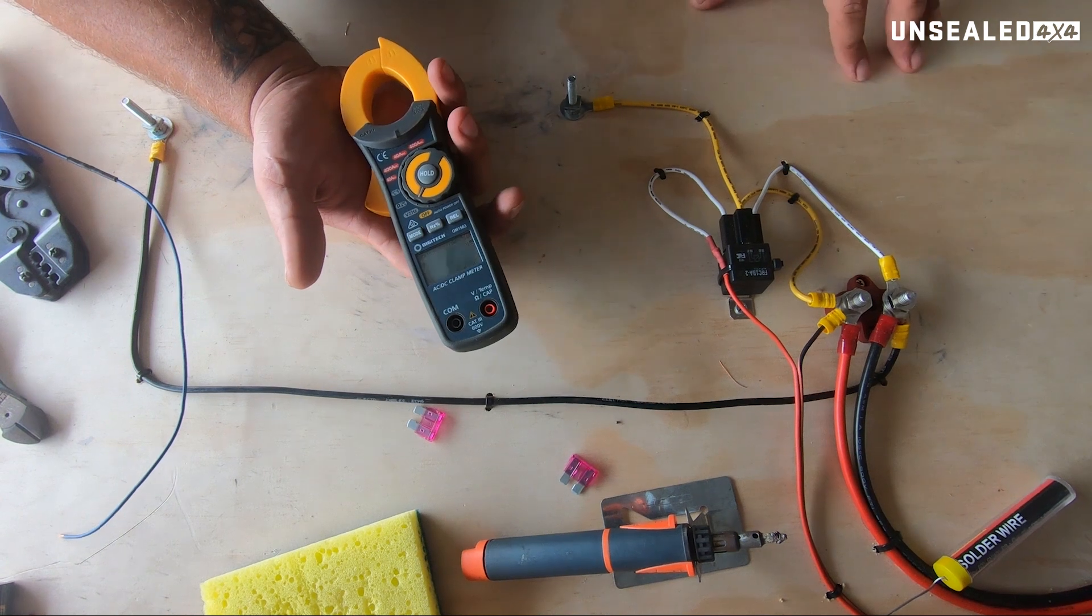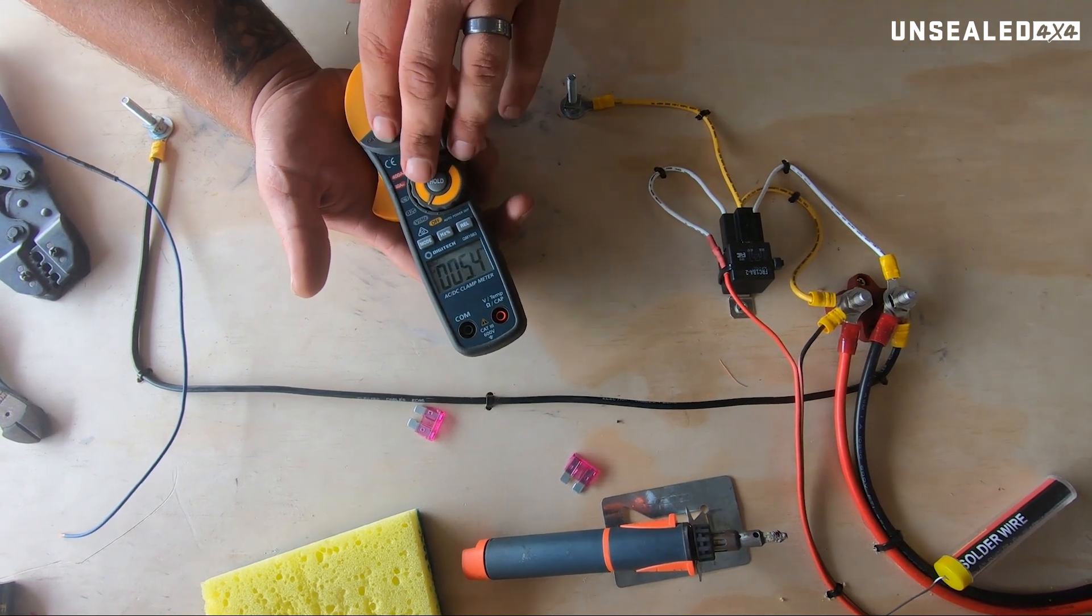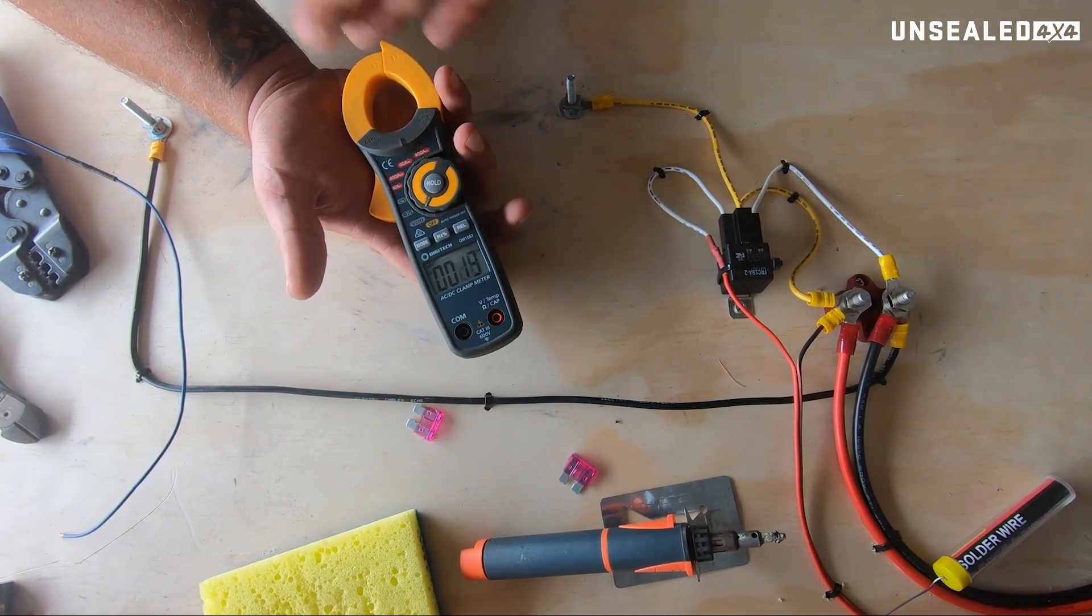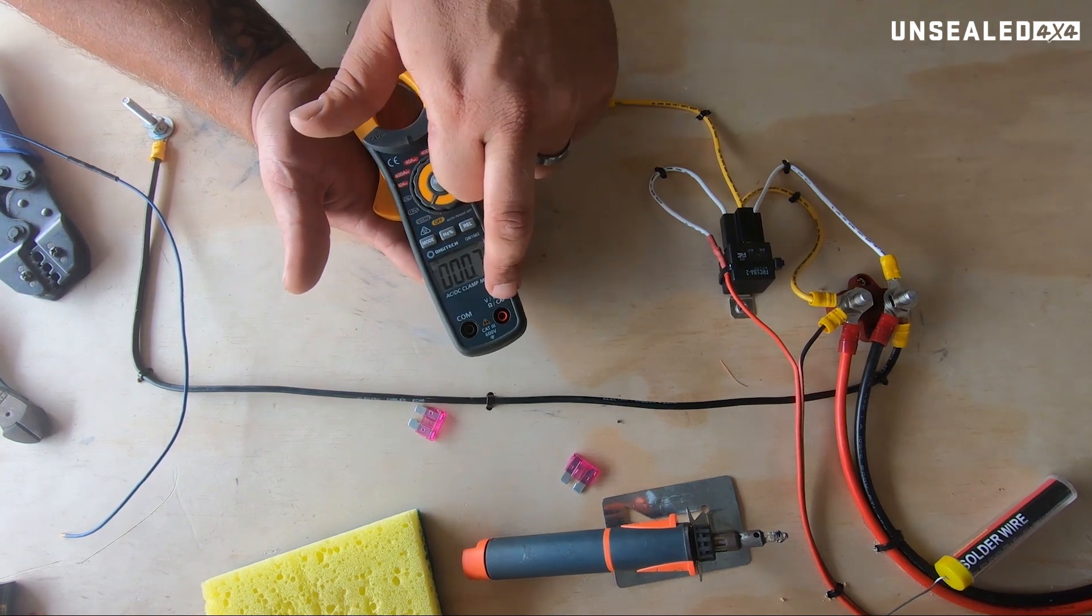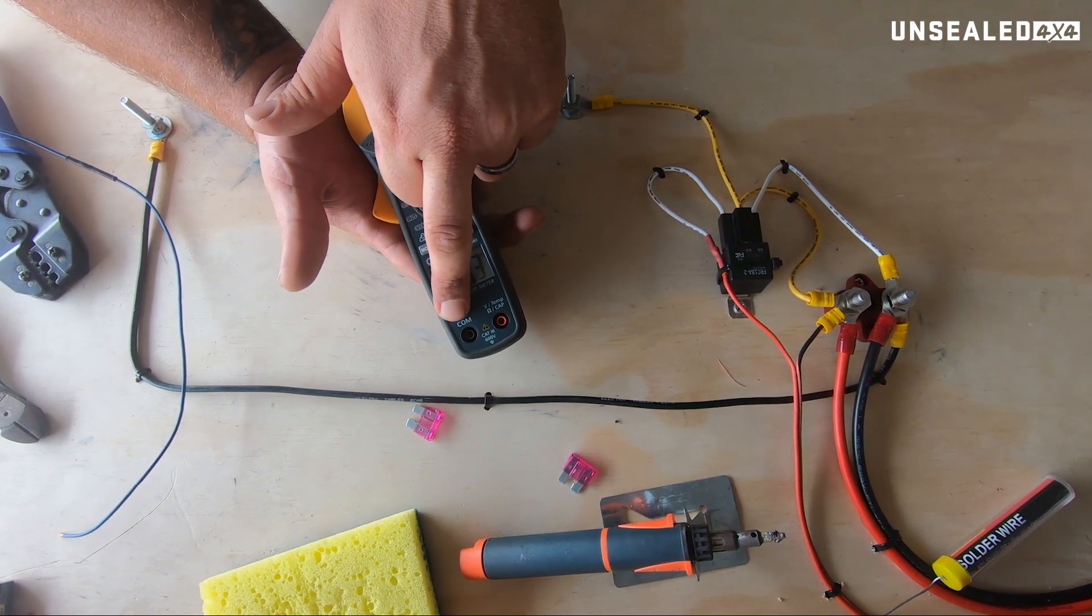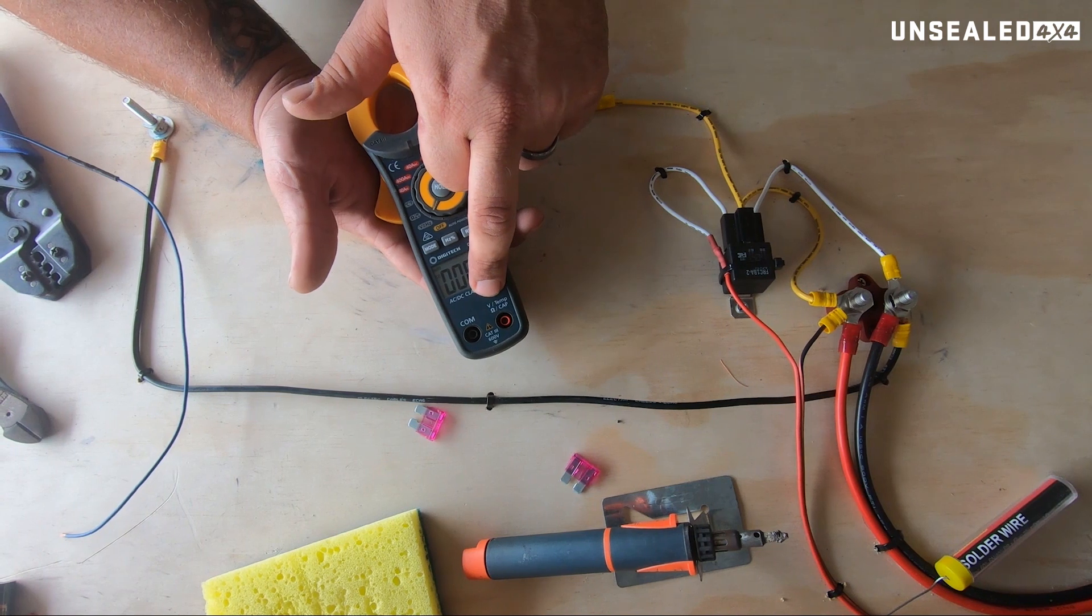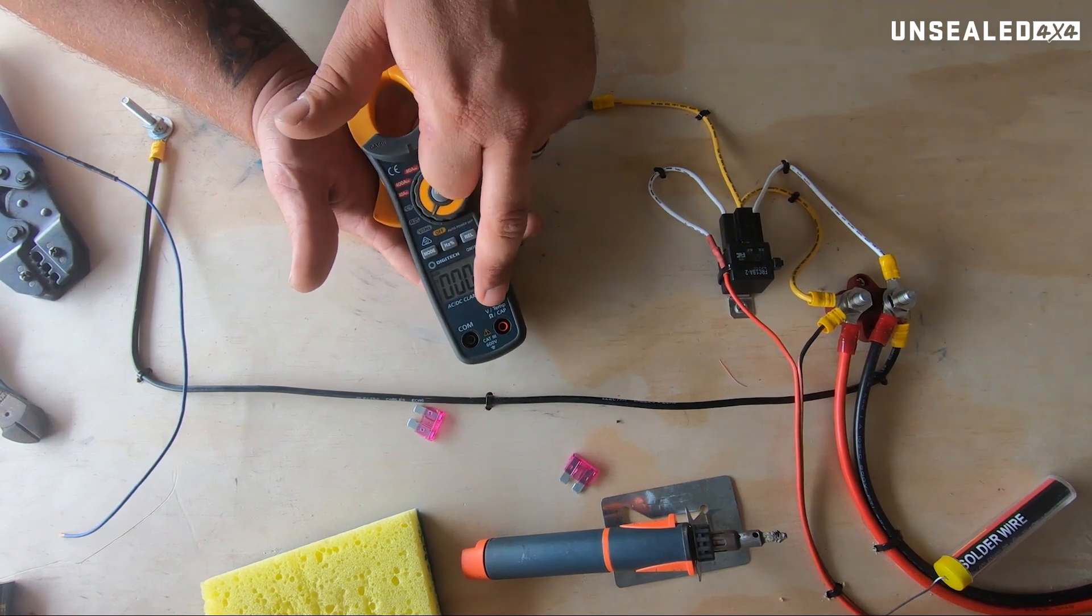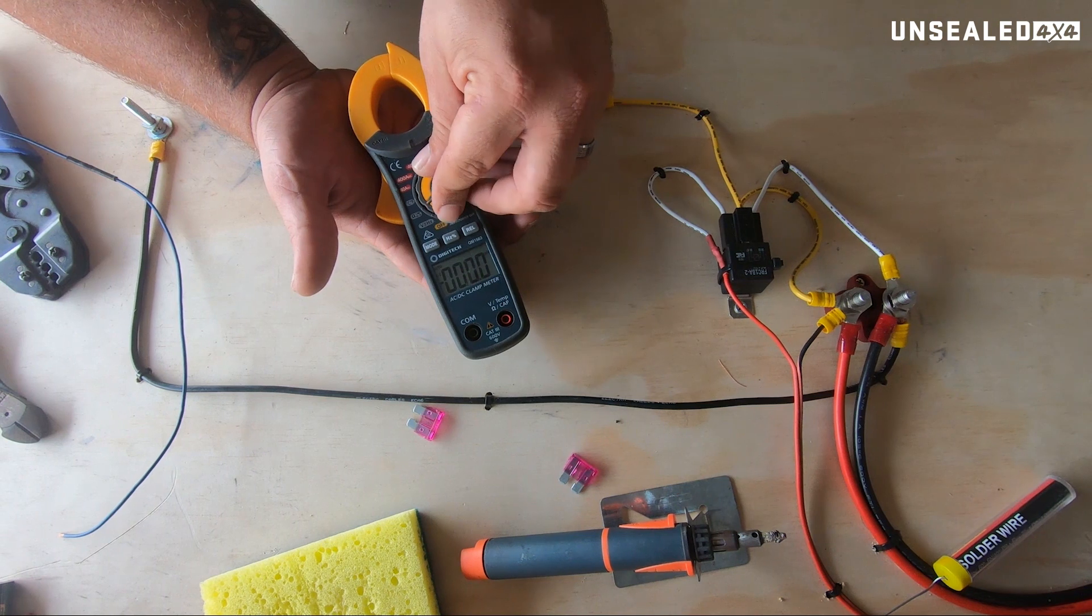Obviously it will tell us volts. You can use it as a normal multimeter. It will tell us how many volts we've got. You've got your standard ports. You've got your comm, which is your common. So that's your earth. And you've got your positive, which will give you volts, temperature, ohms, and capacitance.